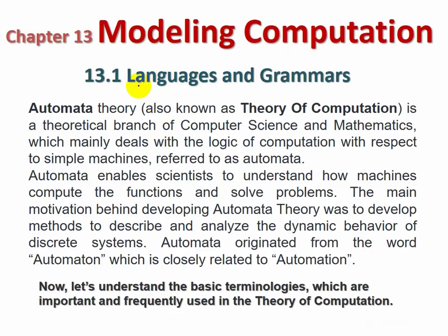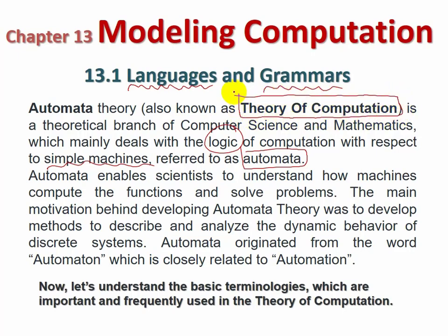Section 13.1 is Languages and Grammars. We first want to understand what languages are for computation understanding and what the concept of grammar is. Automata Theory, also known as the Theory of Computation, is a theoretical branch of computer science and mathematics which mainly deals with the logics of computation with respect to simple machines referred to as Automata. Automata is called a simple machine so that we can understand the logic of computation, which is computer science or math. This is an advanced course.